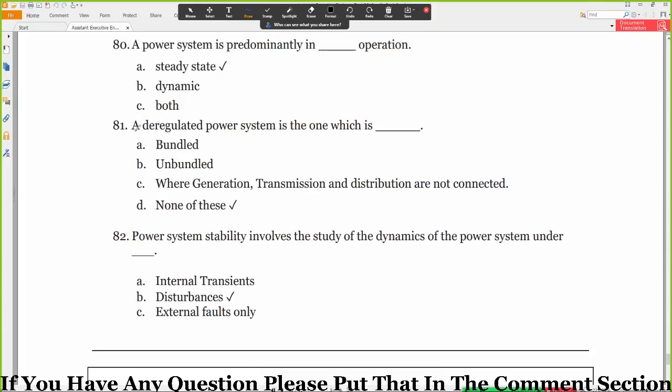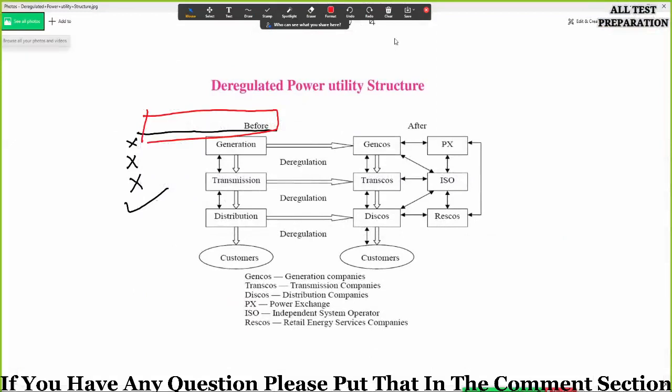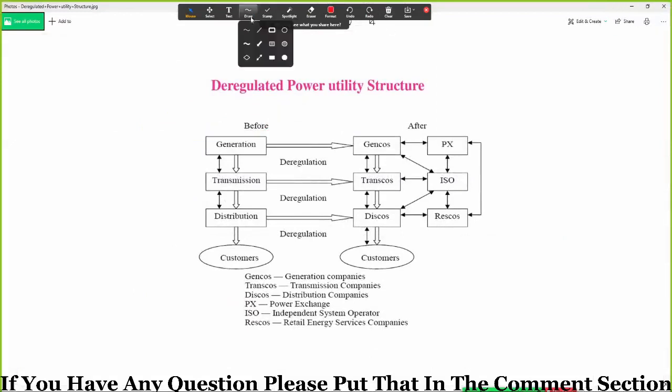Next, question 82: A deregulated power system is the one which is bundled, no, unbundled, where generation transmission and distribution are not connected, no, none of the above. Okay, let's understand what is meant by the deregulated power system.